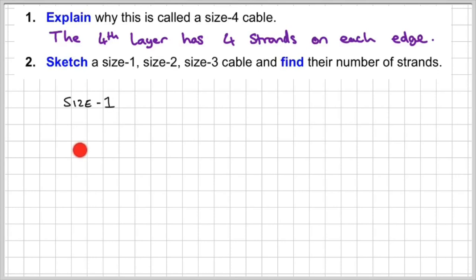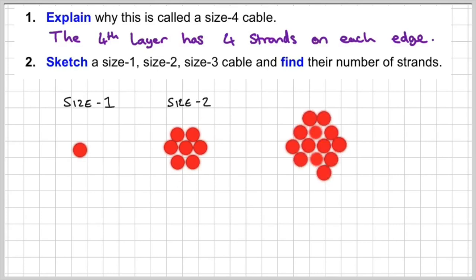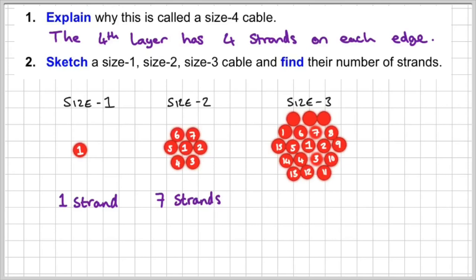Here's my sketch for size 1, my sketch for size 2, and here's my sketch for size 3. Sketch means to represent using a diagram. To find, we need to show some calculation — working out. My working out here is to count the number of dots, or the number of strands. For size 1, I have 1 strand. In size 2, I have 7 — that's a 7-strand cable. And for size 3, I have a total of 19 — that's a 19-strand cable.